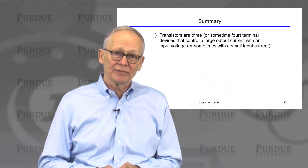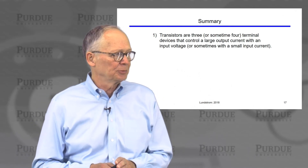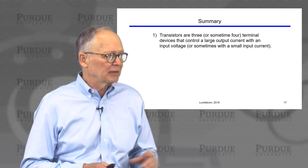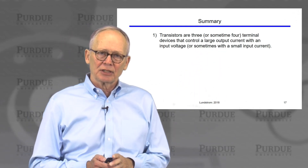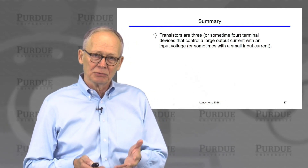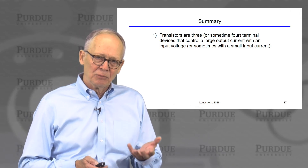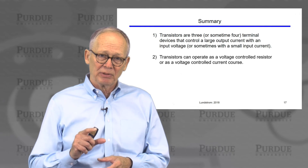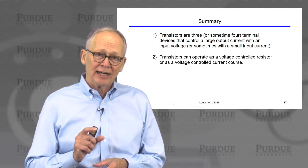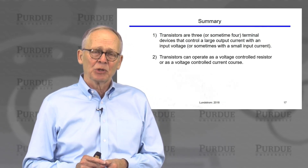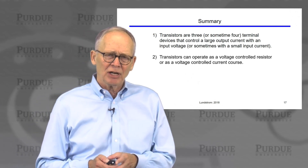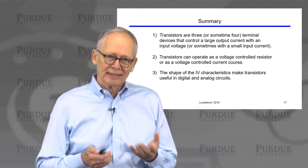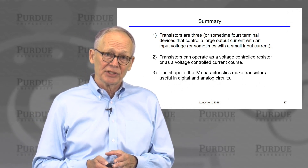Let me summarize the key takeaways. Transistors are basically three-terminal devices — one control terminal controls a large current through the other two. In the MOSFET, it's a small voltage that does this control. Transistors can operate either as a voltage-controlled resistor when we apply a small voltage between drain and source, or as voltage-controlled current sources when we apply a large voltage. We talked about output characteristics and transfer characteristics. The shape of the IV characteristics makes transistors useful for both digital and analog circuits.